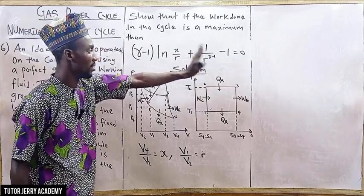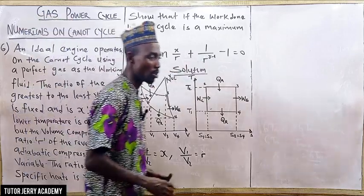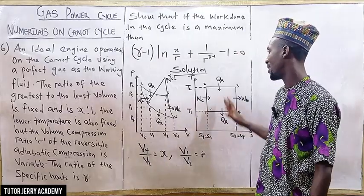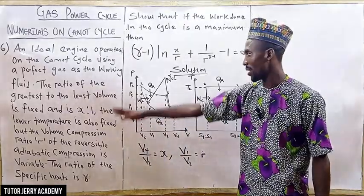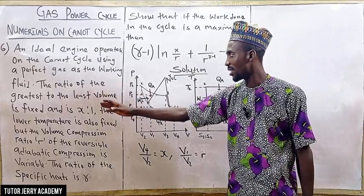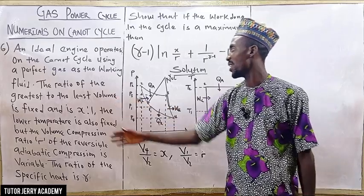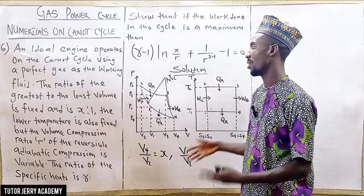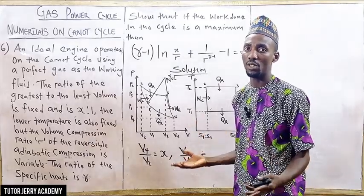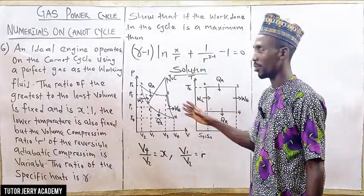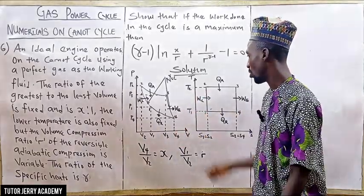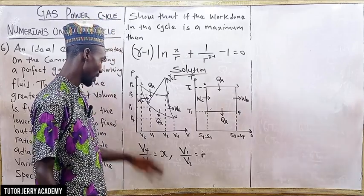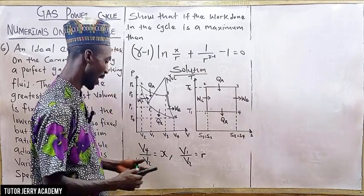To solve this, we need to draw our PV and TS diagrams. They give us the ratio of greatest to least volume, which is s ratio one. We have V4 over V2 equals s, and V1 over V2 equals r.